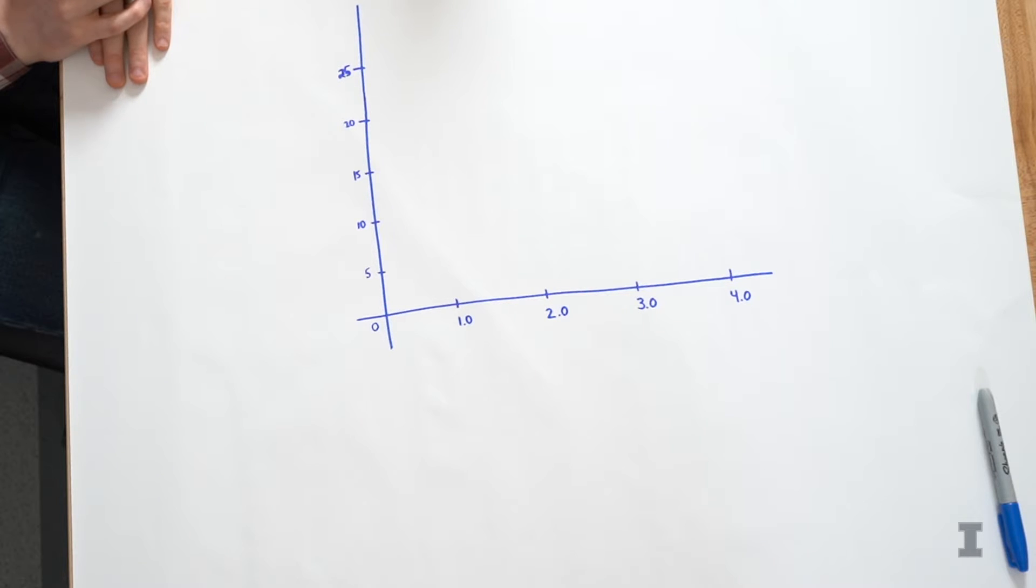So we're going to look at the GPA data set, which we talked about in this series. And for this histogram, we're going to look at the average GPAs of courses at Illinois. So Wade, can you explain a little bit about what that means?